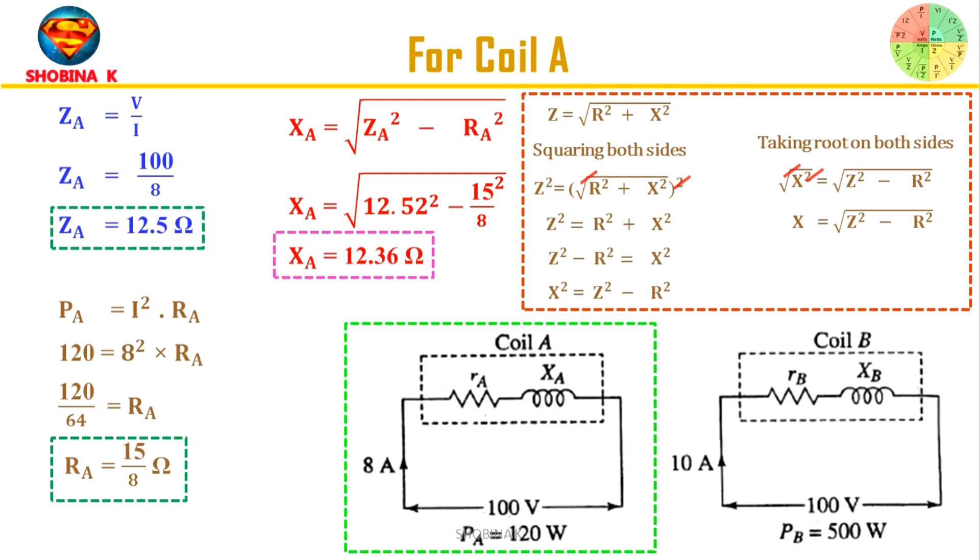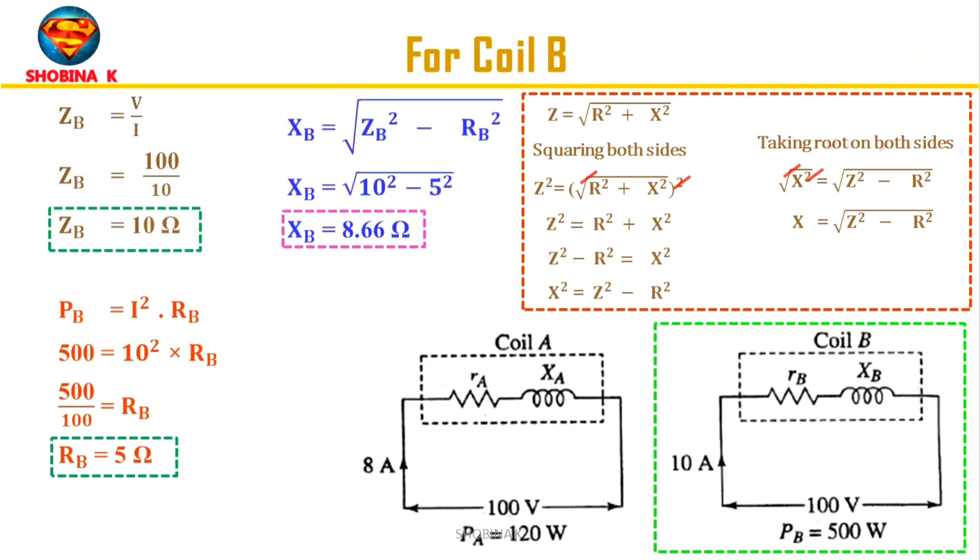Now let's find for coil B. The same formula is applied here. Now the impedance value obtained for coil B is 10Ω, and the resistance we obtain is 5Ω, and the reactance is 8.66Ω.